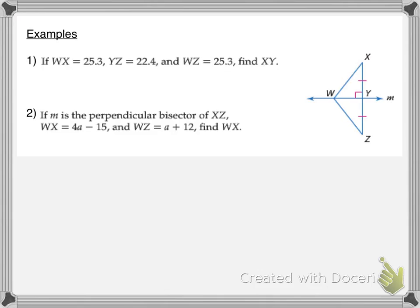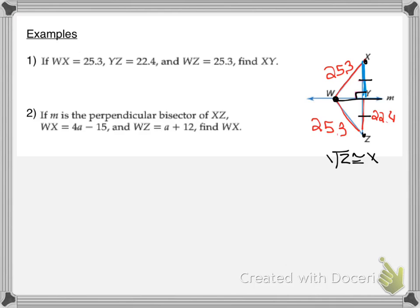Let's put these theorems to use. We know that WX is 25.3, YZ is 22.4, and WZ is 25.3. We want to find the length of XY. Point W is equidistant from point Z and X, so W is on the perpendicular bisector of segment XZ. That means YZ has to be congruent to XY. Since YZ is 22.4, XY must also be 22.4.